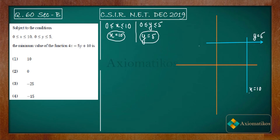We also have the restriction that x is greater than 0, meaning x equals 0 and y equals 0 are inside your region. So this is y equals 0 and this is x equals 0. The feasible region for this inequality is this bounded rectangle.